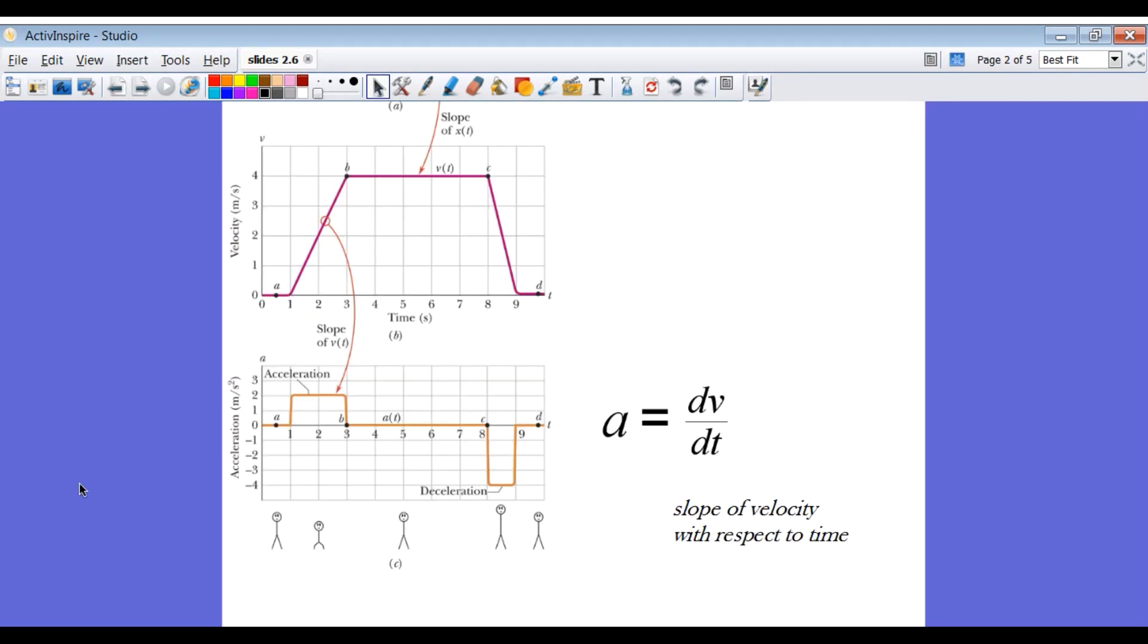Referring back to the graphs that we saw in sample problem 2-2 in section 2-5 of the book, we can see here that the slope of the velocity time graph is the acceleration. So here, my change in velocity was 4 from 0 to 4, and my time it took was from 1 to 3, 2 seconds. So change in velocity 4 divided by change in time 2 gives me an acceleration of positive 2. And there is my value of positive 2 on the graph.